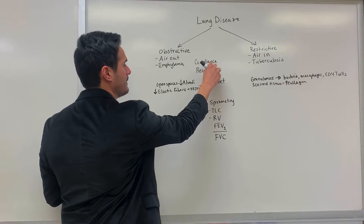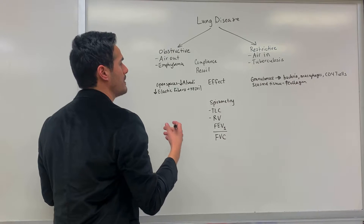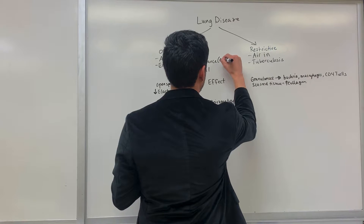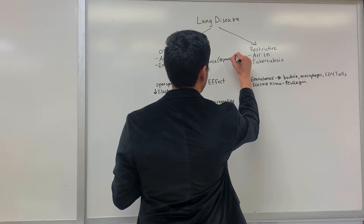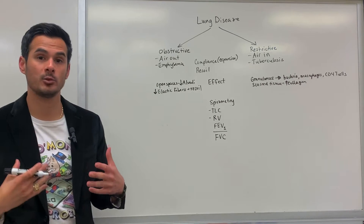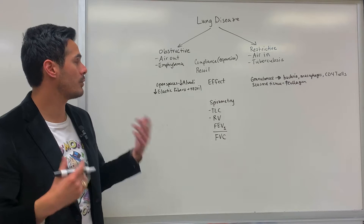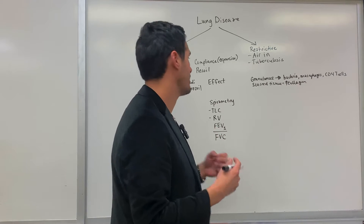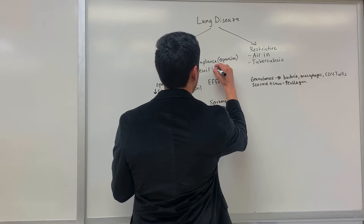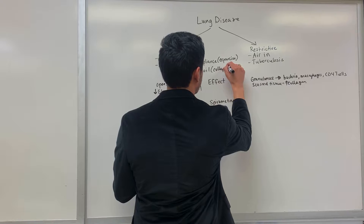This leads to the difference between compliance and recoil. When we talk about compliance, we're talking about the expansion of the lungs — when you breathe air in during inhalation, the lungs fill with air. But recoil is the collapse when you're breathing that air out during expiration.